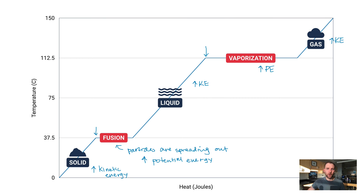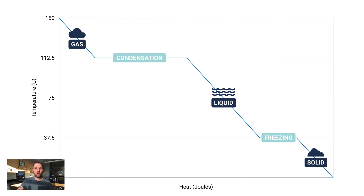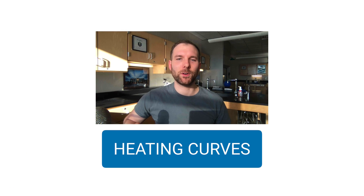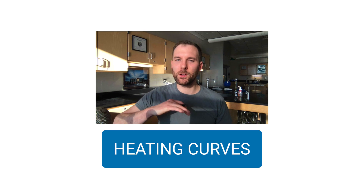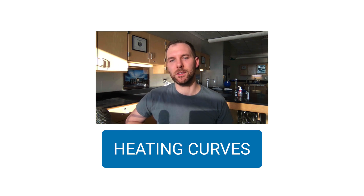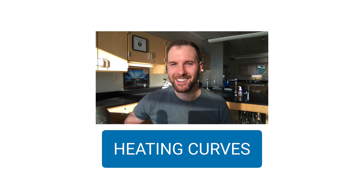A cooling curve is not too much different — it's essentially just flipped around. A cooling curve starts with a gas and consistently removes heat at a constant pace, watching it go from gas to liquid to solid. The only major difference is that this isn't vaporization — it's condensation — and instead of fusion it's freezing. Other than that, it's really just a flipped version of a heating curve. That's it — heating and cooling curves are helpful to visualize how temperature changes as we change phases of a substance while heated or cooled.